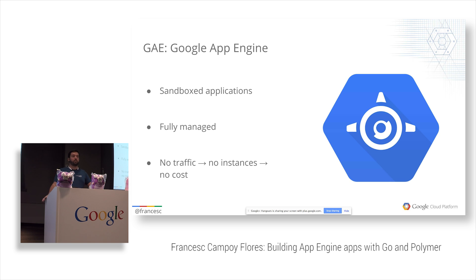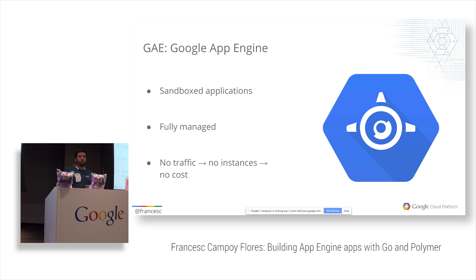App Engine is basically a place to run your apps, which is a sandbox environment. There are constraints — you cannot run any language you want. With App Engine you can use only Go, Python, Java, and PHP, and you can't install arbitrary third-party libraries. So if you want to do image processing with some C++ library, App Engine is not really for you. With managed VMs that problem is solved, but today I'm talking about standard App Engine only.